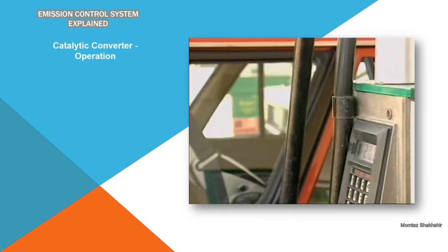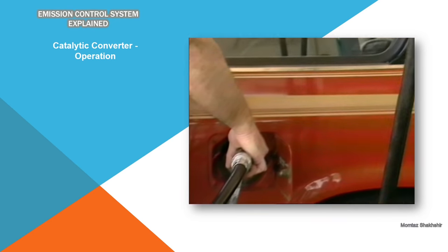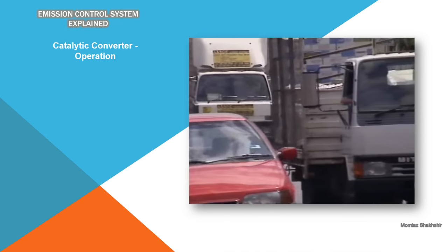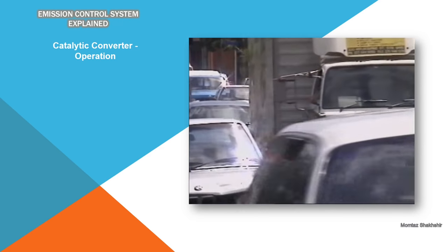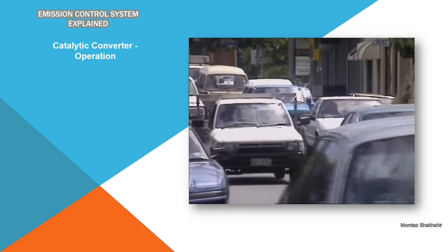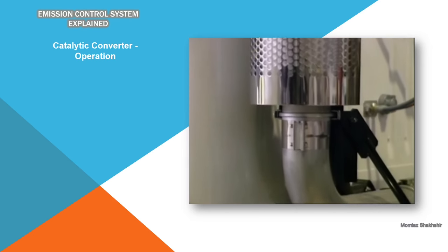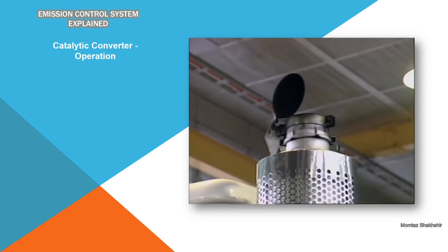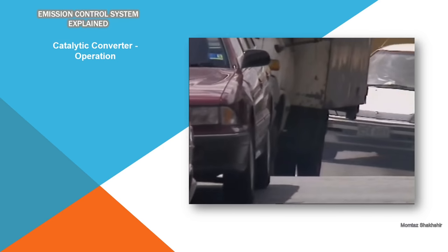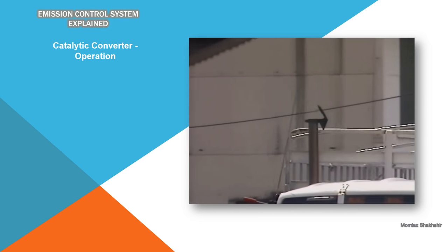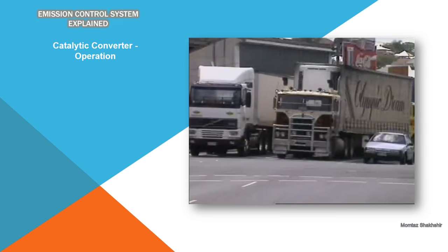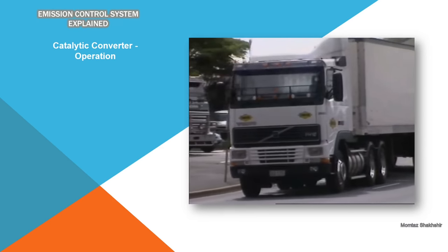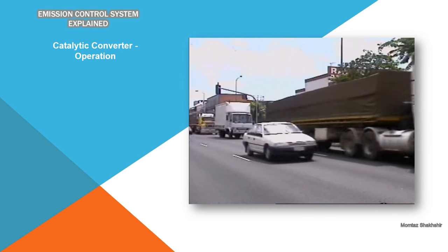Leaded fuel cannot be used in vehicles with a catalytic converter — the lead contaminates the catalyst and stops the reactions from occurring. The use of unleaded fuel has the further benefit of reducing the amount of lead emitted into the atmosphere. Diesel engines are usually low in carbon monoxide and hydrocarbon emissions, though some do emit high levels of oxides of nitrogen. The main problem with diesel engines is the emission of particulates — minute particles of carbon, visible as black smoke. Most diesel engines of heavier vehicles use electronically controlled injectors, which has considerably reduced the emission of particulates and oxides of nitrogen.